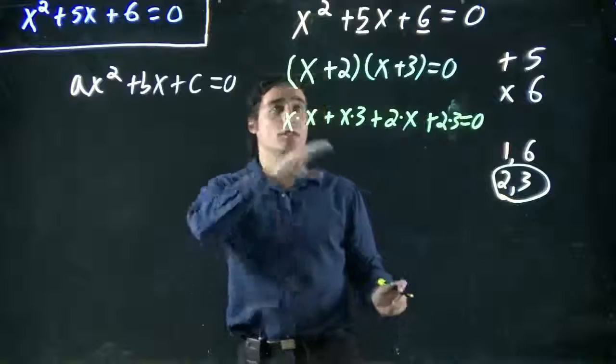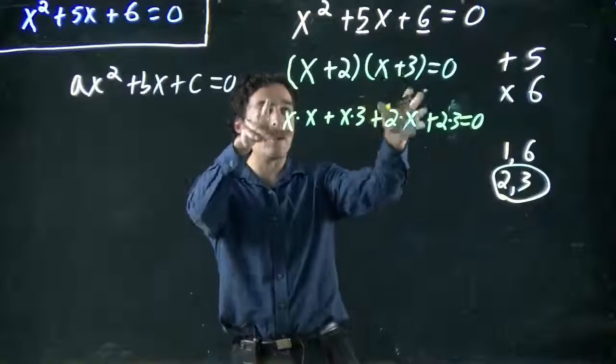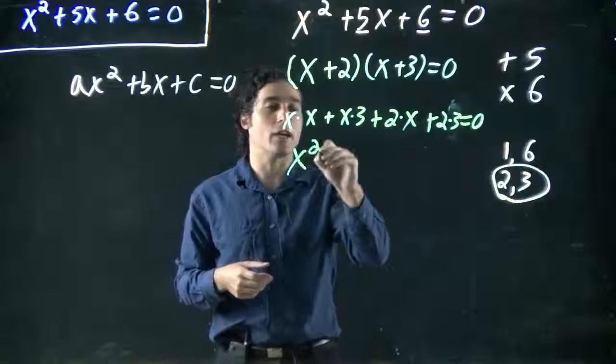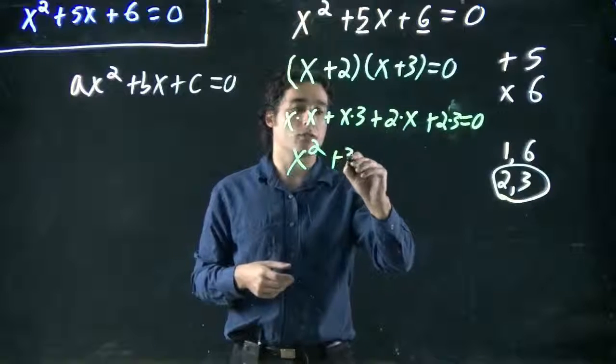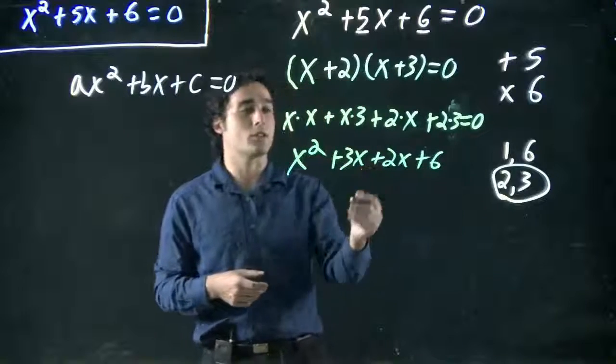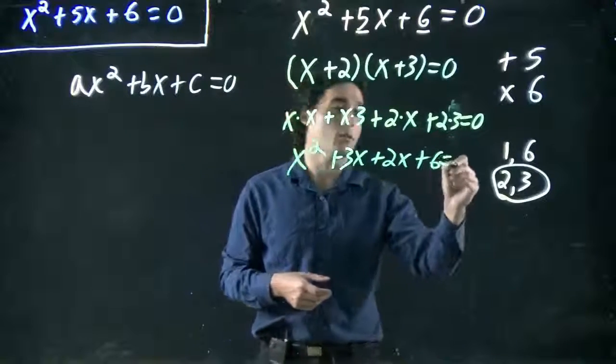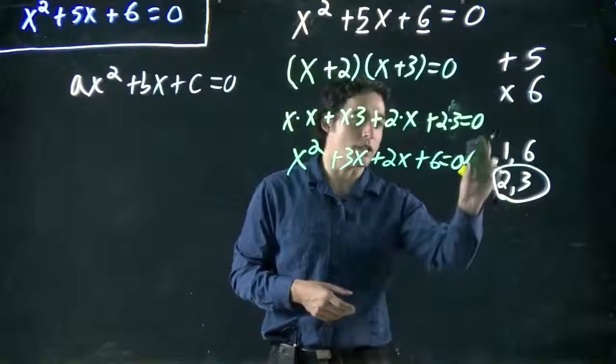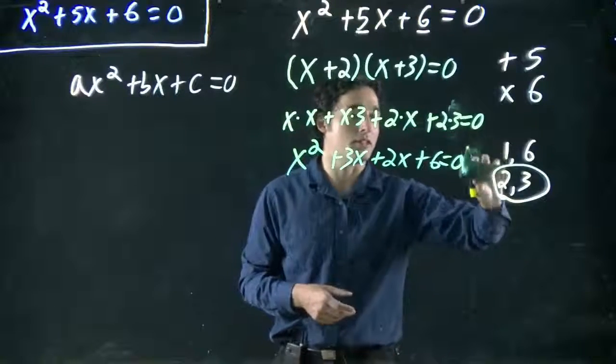Equals zero. And again, we're just checking. You can always go back and double check. If I expand this and I don't get what I started with, I got a problem. So this becomes x squared. This is plus three x plus two x plus six. Three x plus two x would give us five x, what we started with. Great. So we didn't mess up. Don't let the check mark confuse you. I'm just enthusiastic. Go us.